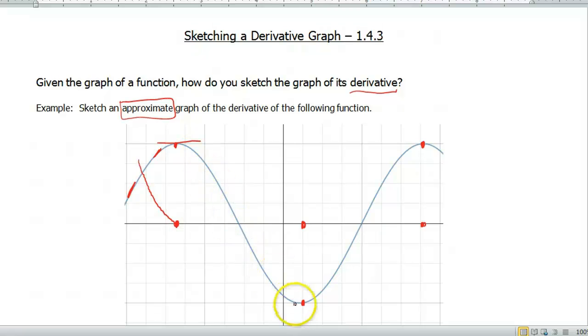Okay, now between these two points, so between these two horizontal tangents, we know that the graph is decreasing. And again, you can kinda go through and eyeball the rates that it's decreasing at. But we know that we're gonna have to have something that's negative on our derivative.